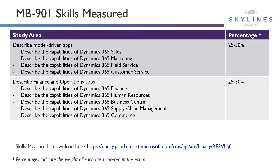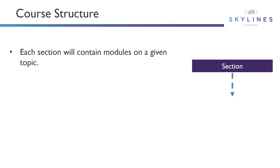The skills measured list is really a key resource that should be used in your exam preparation. I always use this list — I usually download and print it out, and as I gain knowledge of a specific topic I check off the items on the list. Once everything's checked off, I'm ready to take the exam. You can download the list directly from Microsoft at the link here and use it as you work through this course.